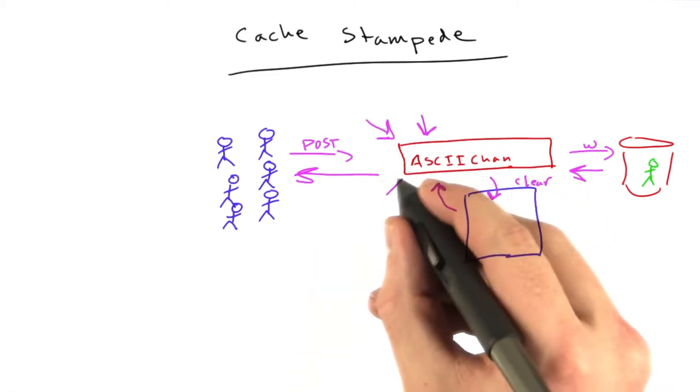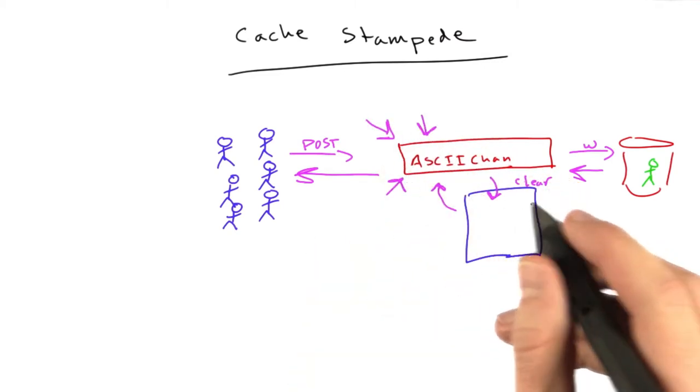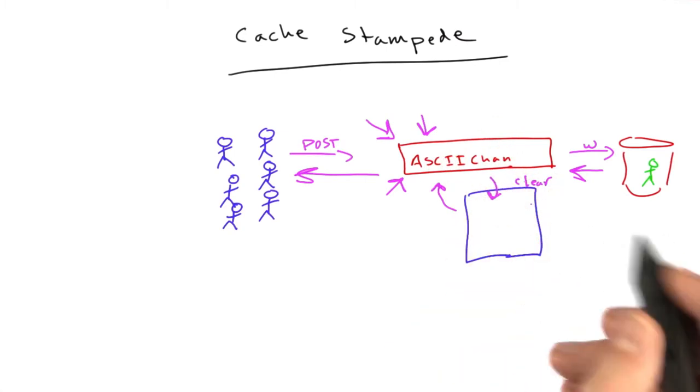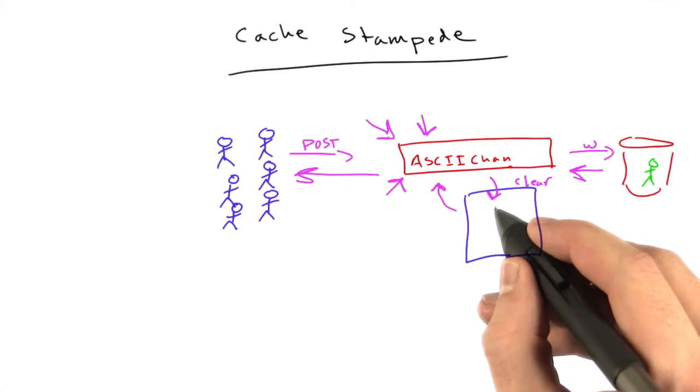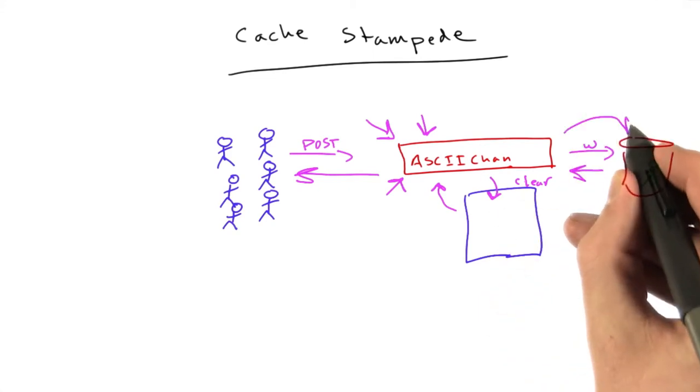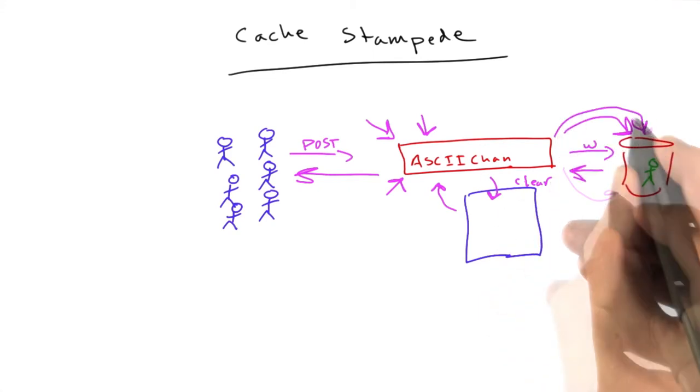So, we've got all these requests coming in to ASCII Chan, and our cache is empty. They're all coming in at the same time. We just cleared the cache, and what's going to happen is they're all going to say, okay, the cache is empty, therefore we must all read from the database at the same time.